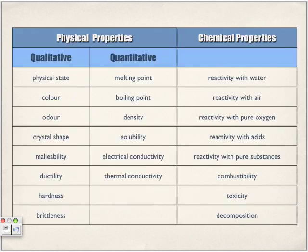Here we have a chart to distinguish between physical properties and chemical properties. Physical properties can be measured as either qualitative or quantitative. Qualitative properties are descriptions: physical state, color, odor, crystal shape, malleability, ductility, hardness, and brittleness.